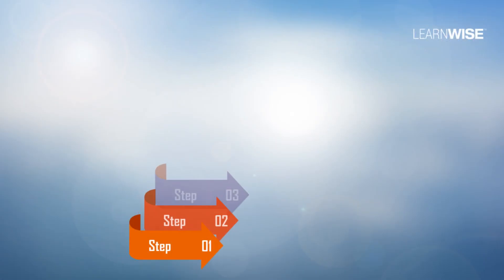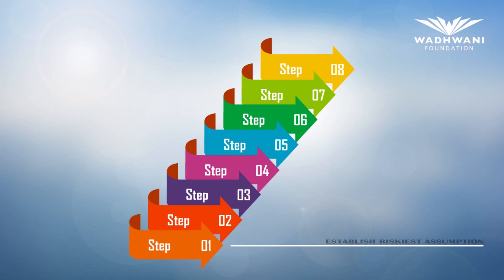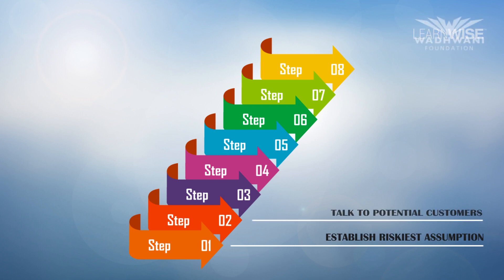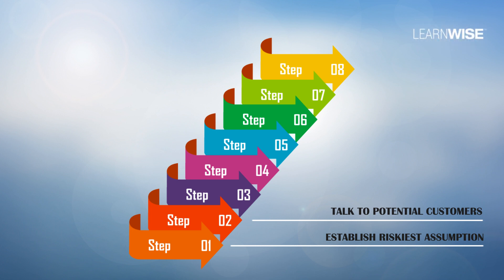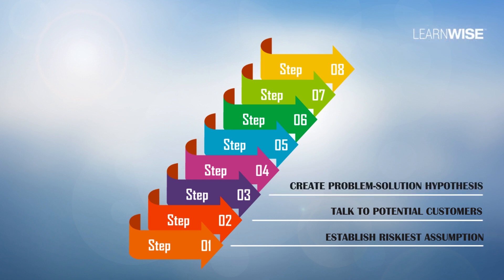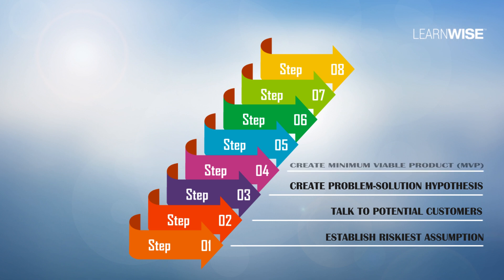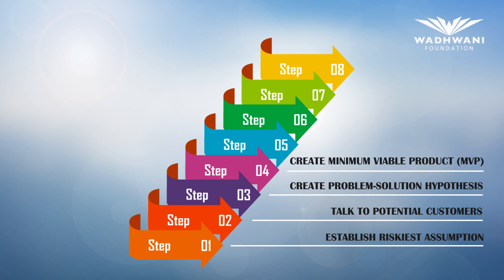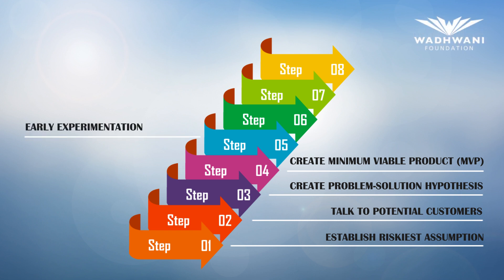There are 8 key lean startup steps. Step 1 is to establish your riskiest assumption. Step 2 is to go out and talk to your potential customers to find out what they are actually thinking. Step 3 is to create a problem-solution hypothesis by defining your customer and the problem they are struggling with. Step 4 is when a minimum viable product, or the MVP, is created.